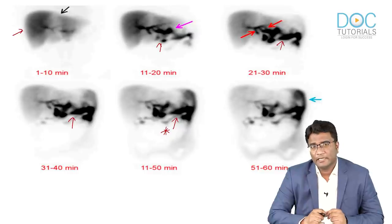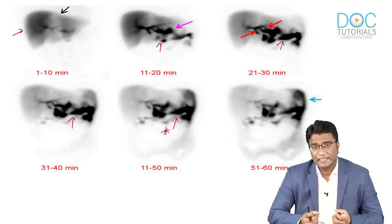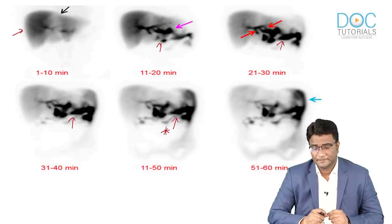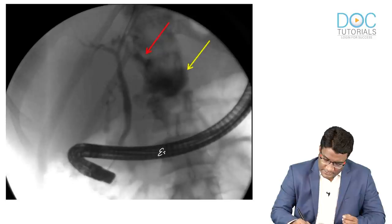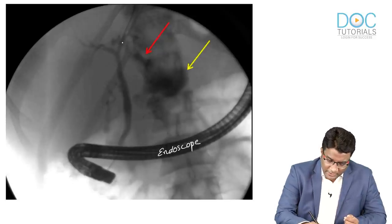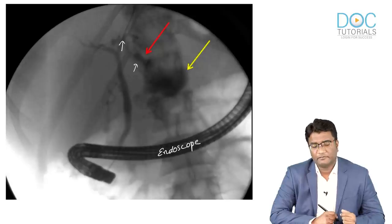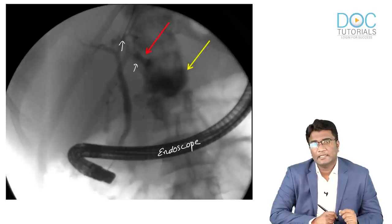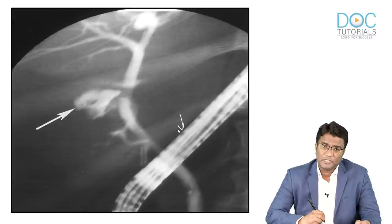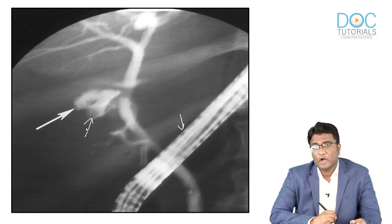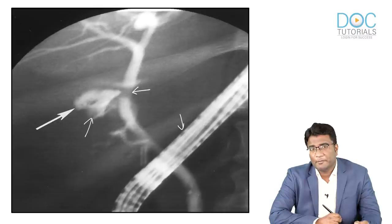HIDA scan confirms the collection is biliary leak but cannot identify the anatomical site — whether from the right hepatic duct, left hepatic duct, common bile duct, or cystic duct stump. It gives functional but not anatomical detail. Looking at the ERCP image from the same patient, you can identify a leak coming from the left hepatic duct — showing injury to the left hepatic duct. ERCP is the most accurate for the anatomical site of leak and is both diagnostic and therapeutic.